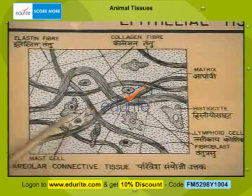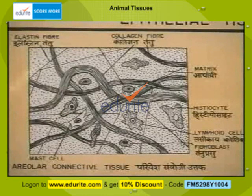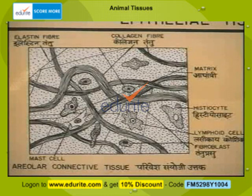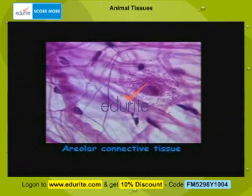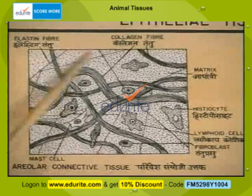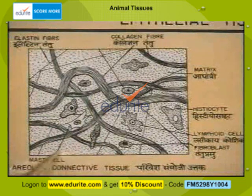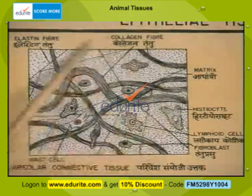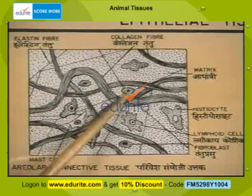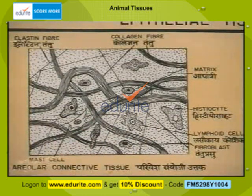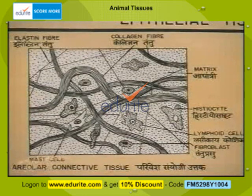The second kind of animal tissue is the connective tissue. Connective tissues are usually found between organs, connecting them and binding them together. There is the general connective tissue, also called the areolar connective tissue. The areolar connective tissue consists of a matrix of protein material forming the base, with cells and fibers embedded in this protein matrix. This areolar tissue is usually found binding different organs.